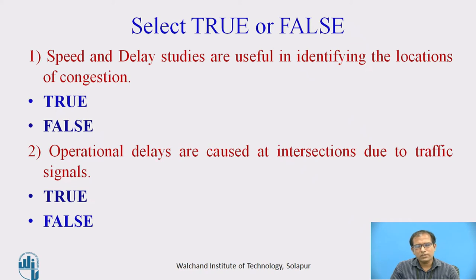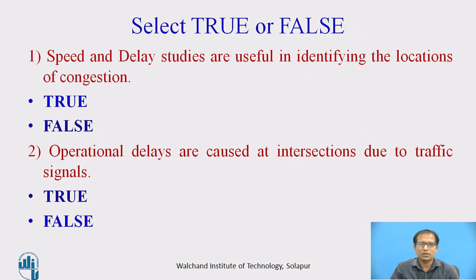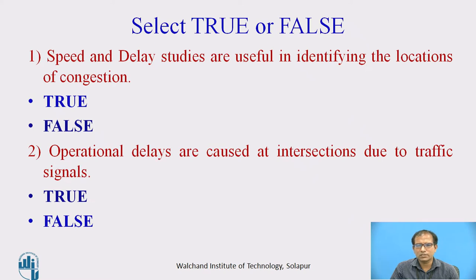With the previous understanding, I hope you are able to select the correct answer among these multiple choice questions. First: speed and delay studies are useful in identifying the location of congestion — is it true or false? Second question: operation delays are caused at intersections due to traffic signals. You can pause here and give the answer for these questions.